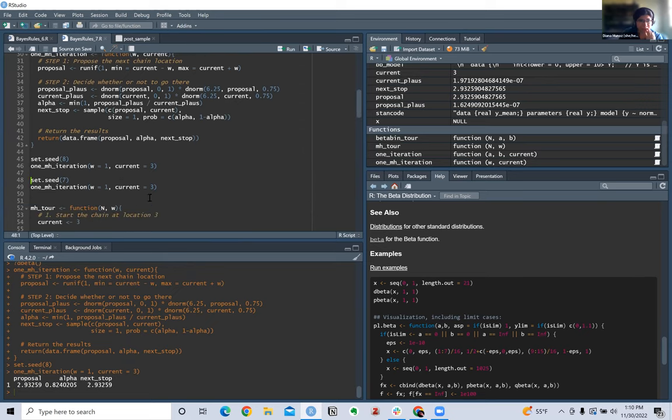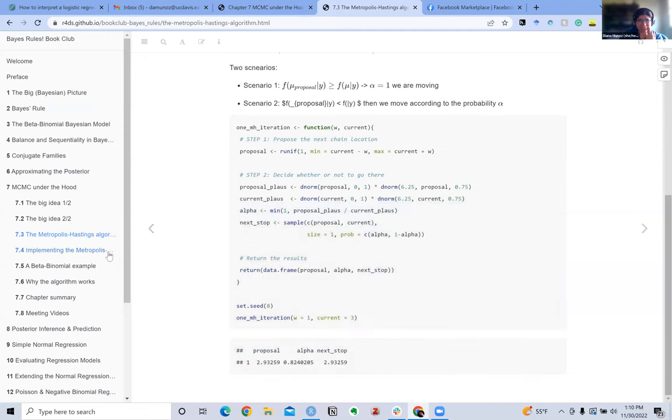So we run this function with a half-width of one with the current location being three. Our proposal is 2.9 and our acceptance probability was 82%, so we accept this proposal and that makes our next stop 2.93. Then we'll repeat that multiple times and that'll get the chain to approximate the mean.